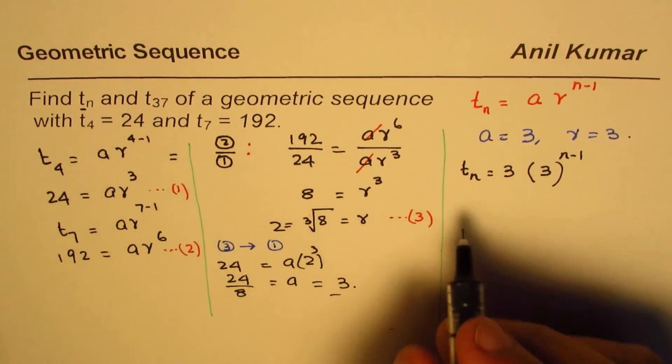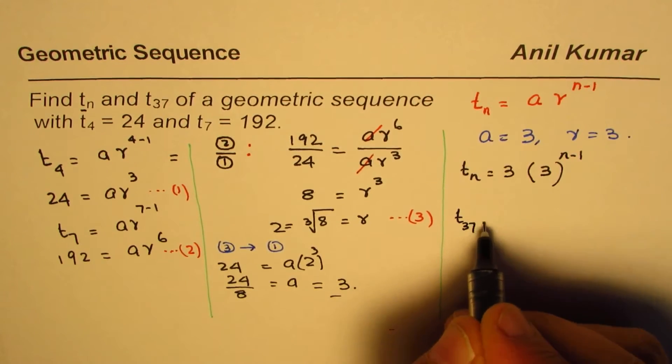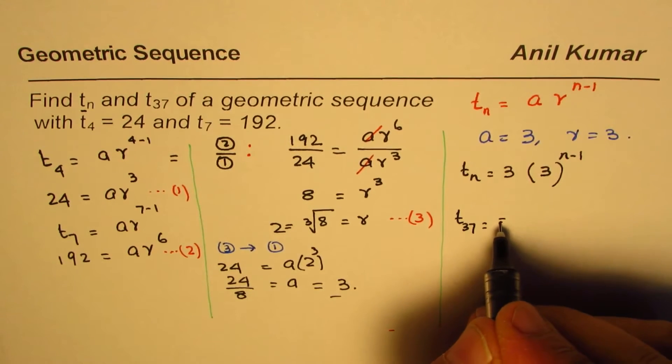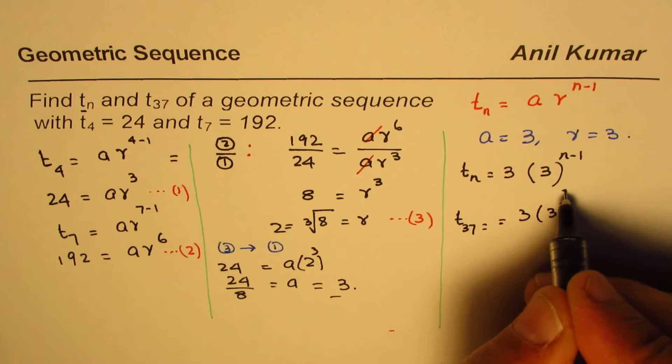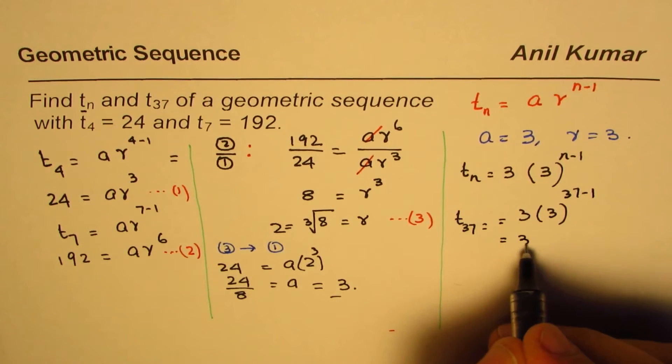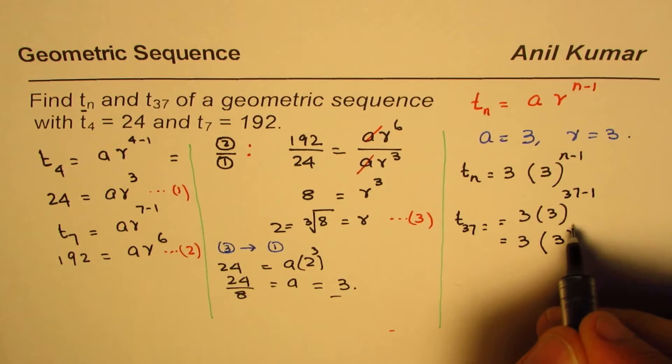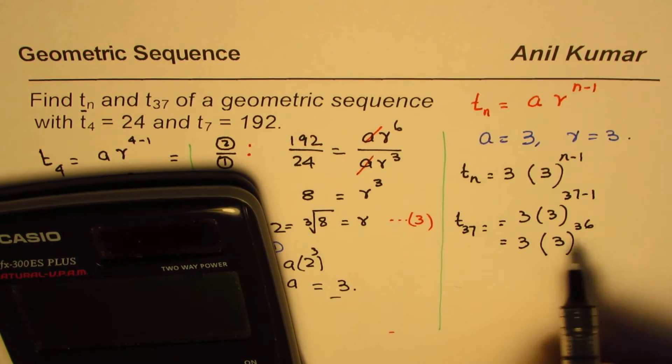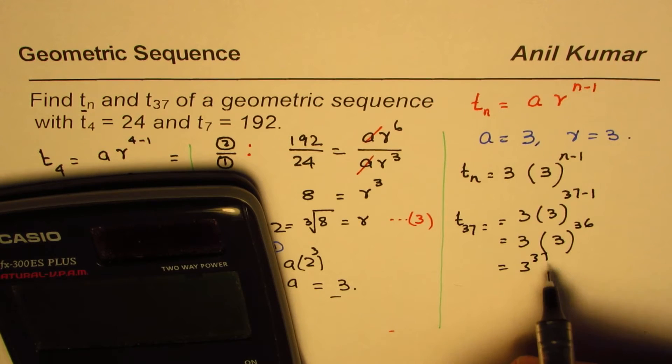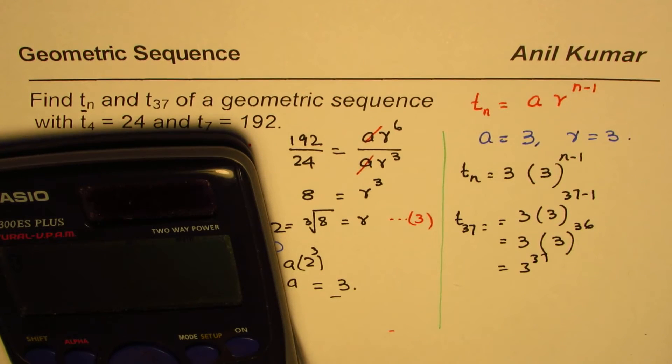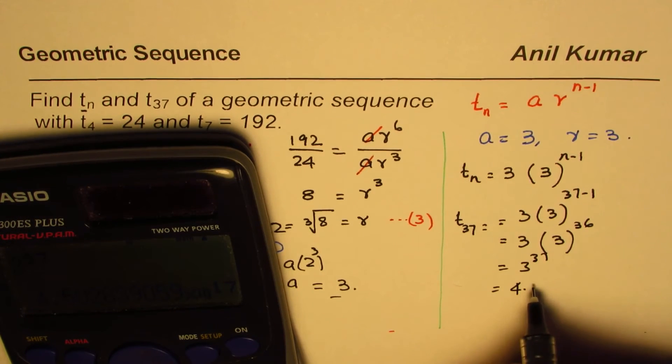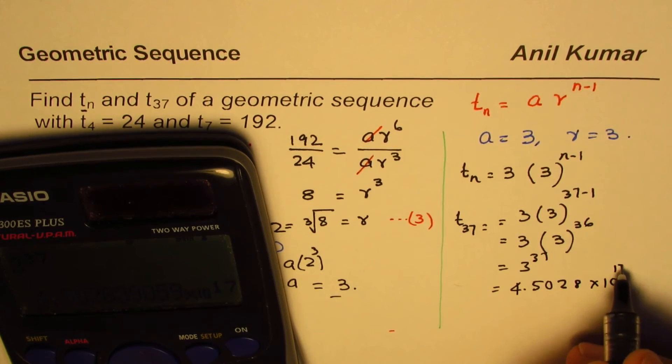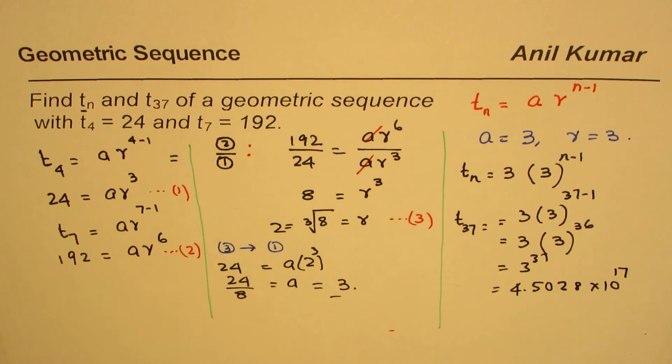The second one is the 37th term. So T37, replace n with 37, will be equal to 3 times 2 to the power of 37 minus 1, which is 2 to the power of 36. We can use the calculator, so 3 times 2 to the power of 36 equals... and we get an answer which is 4.5028 times 10 to the power of 17. So it's a huge term.